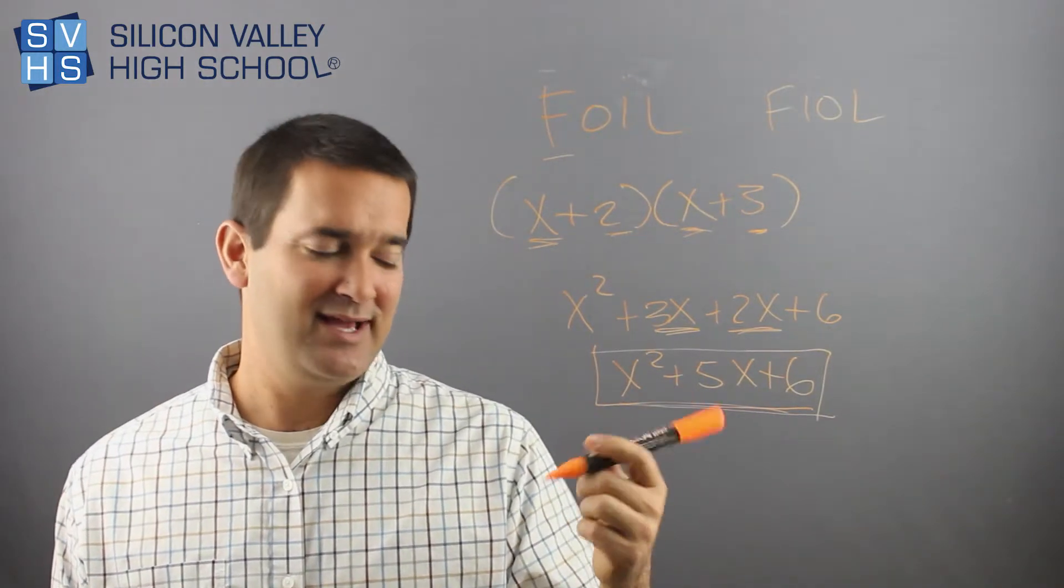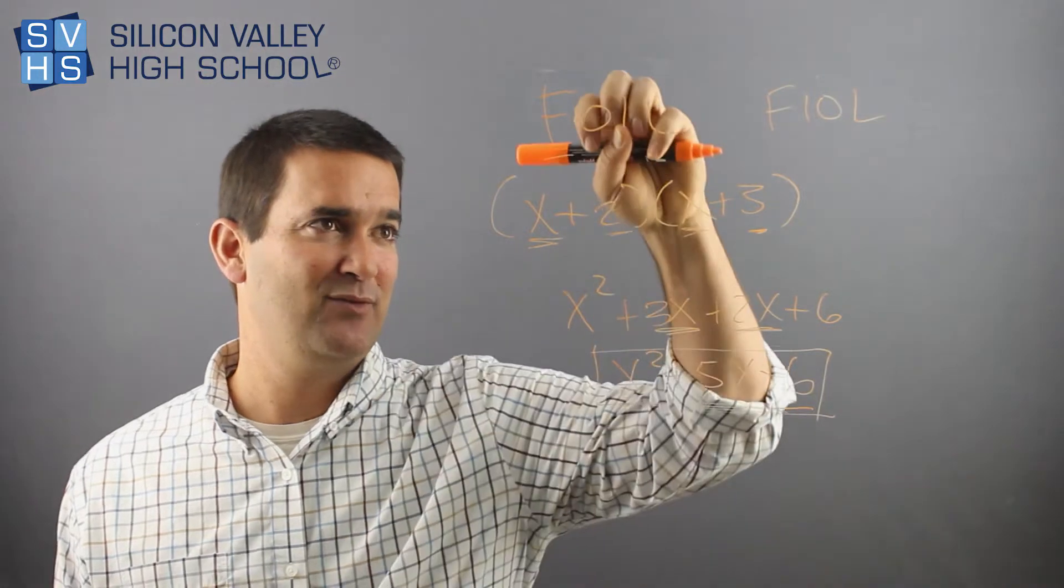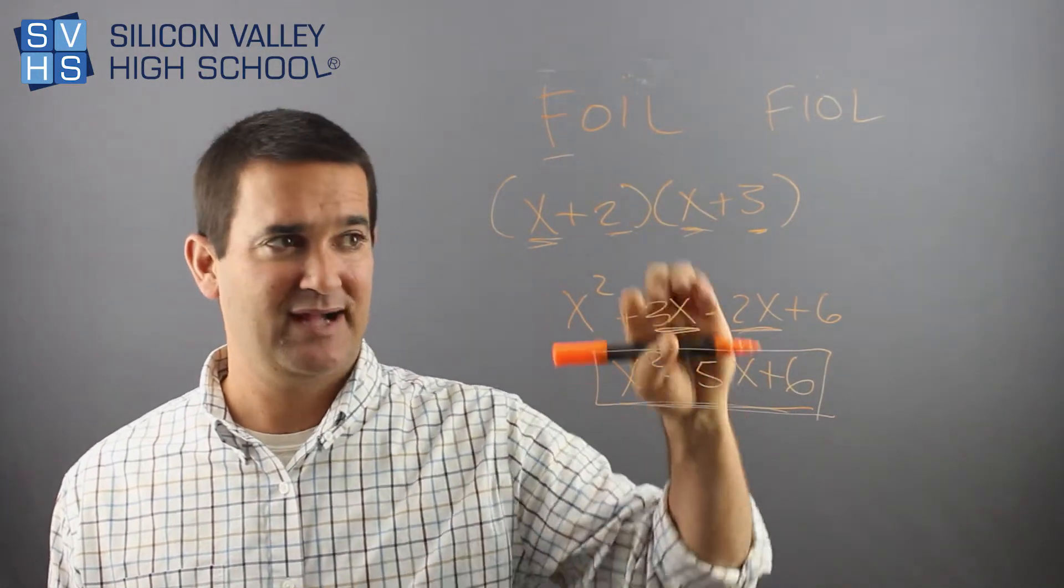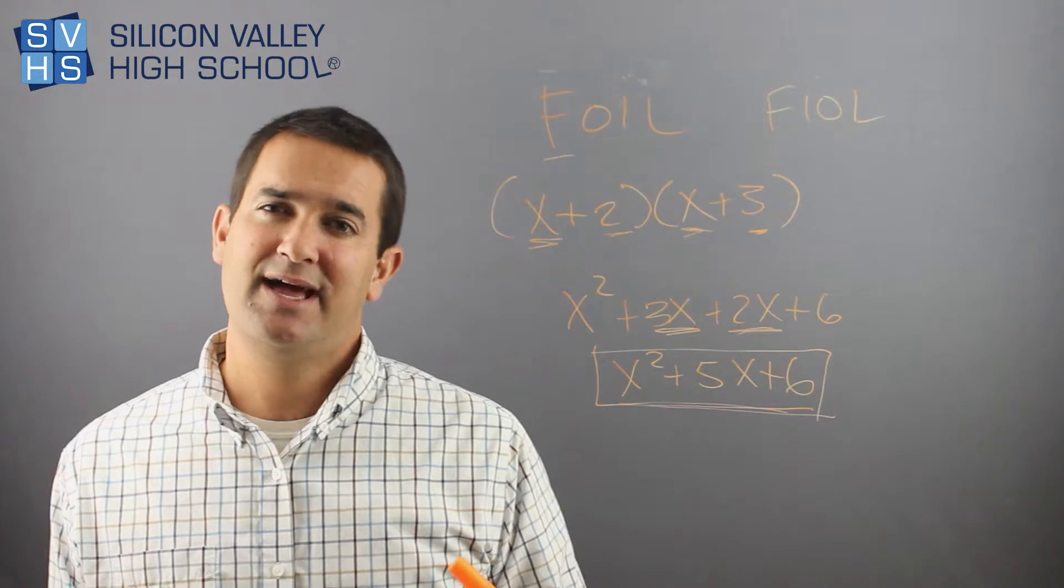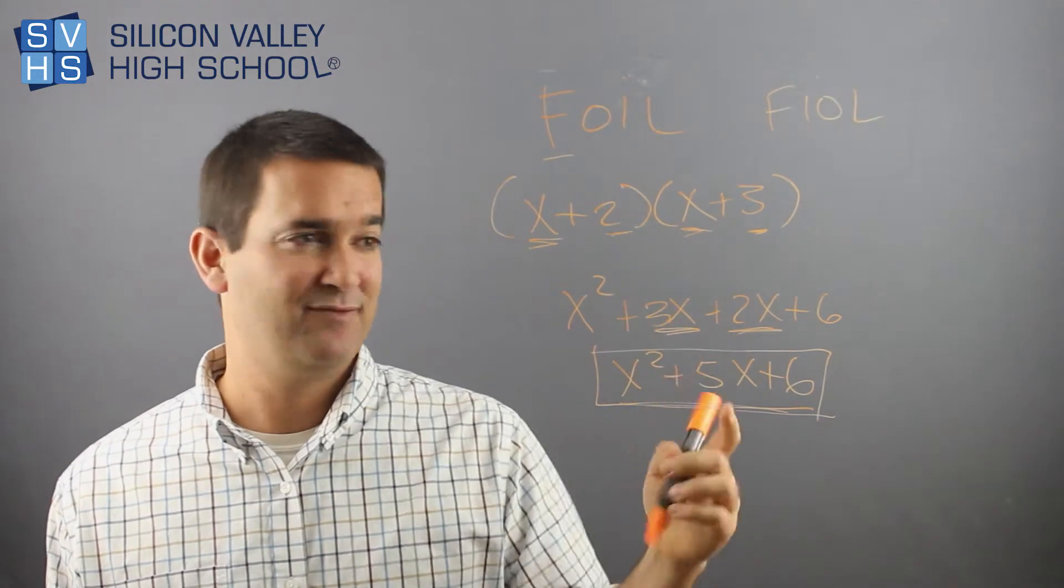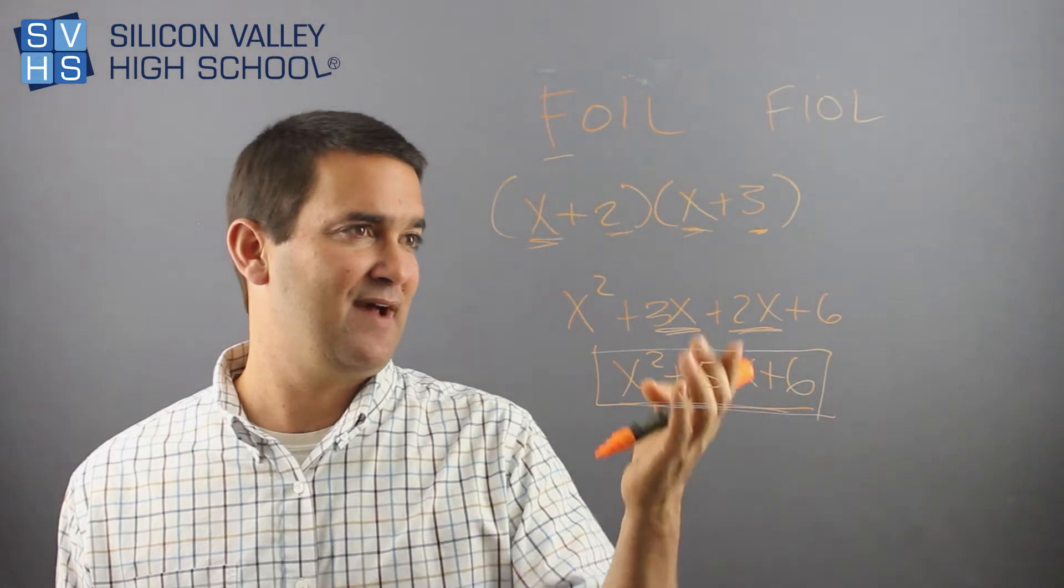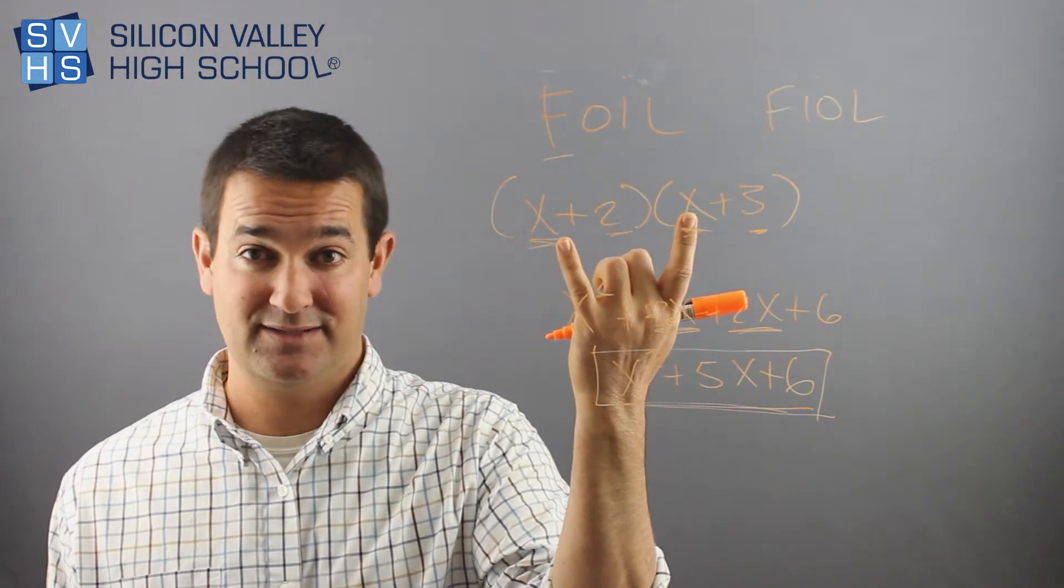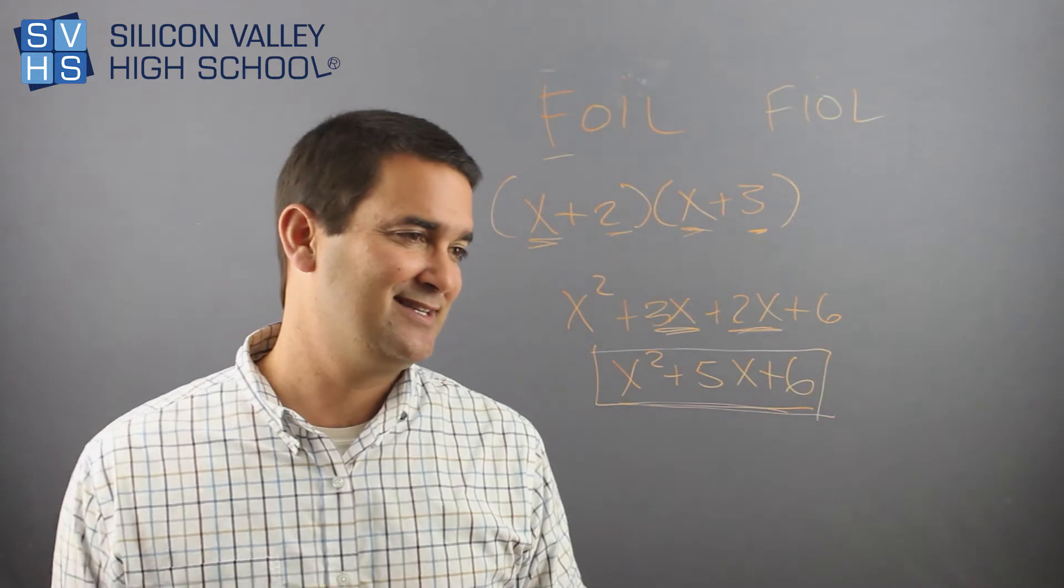And what you'll see later with factoring is, basically, when you foil something, it's the opposite of factoring it. So when you understand how to foil and you understand how to factor, it's good to check your solutions back and forth. In this case, I could easily factor it to see if it goes back to the start, I know I did it right. So that's how it's done.